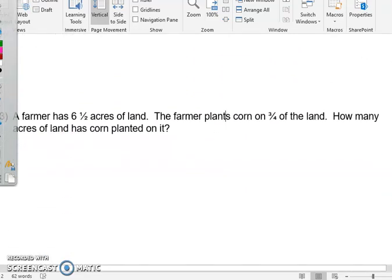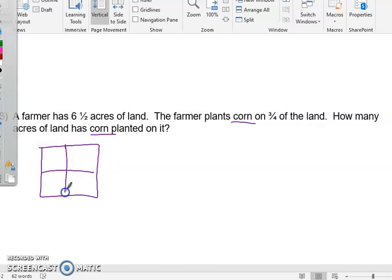Number 3 says a farmer has 6 1/2 acres of land. The farmer plants corn on 3/4 of the land. How many acres of land has corn planted on it? So we're basically looking for corn on this one. So I have in here, this is my acres. I have 6 1/2 acres, and I went on and divided it into 4ths because 3/4 of this is going to be corn. So less than 6 1/2, more than half of that. So if I think of like half of 6, that would be like 3. So it's got to be more than 3, less than 6 1/2.